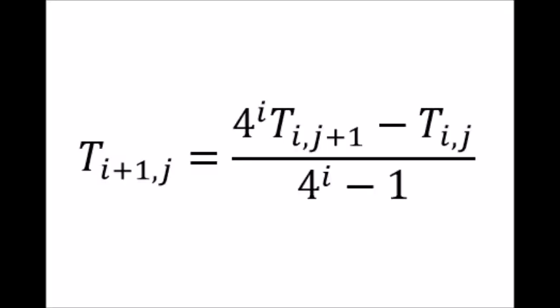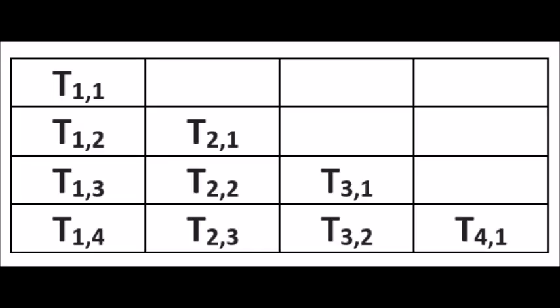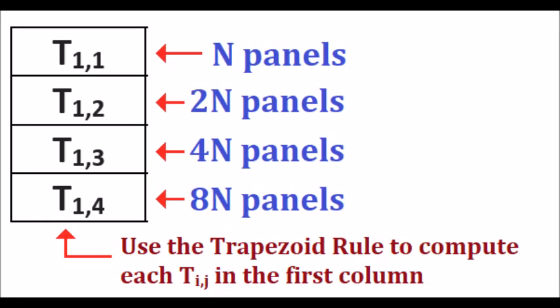Based on what we just saw, we can extend that idea and use this general expression to construct even larger tables. If that doesn't make any sense right now, just wait. I'm going to show you what this means and how to use it. Okay, so once again, this is the table of t's that we just made. For the first column, we must use the trapezoid rule to compute each t. It shouldn't matter too much how many panels we start with. However, in each row, we must double the number of panels from the previous row.